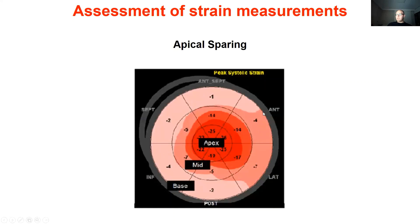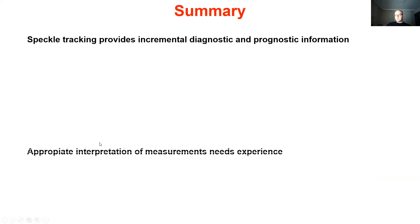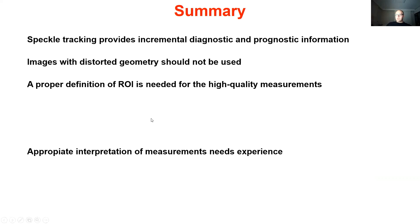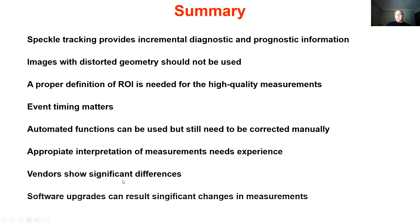Here is a case of amyloidosis with apical sparing, since deposits are mainly located in the basal segments. To conclude: speckle tracking provides incremental diagnostic and prognostic information. Appropriate interpretation of measurements requires experience. Images with distorted geometry should not be used. A proper definition of region of interest is needed for high-quality measurements. Event timing matters. Automated functions can be used but still need to be corrected manually. Vendors show significant differences, and software upgrades can result in significant changes in measurements. Thank you very much.